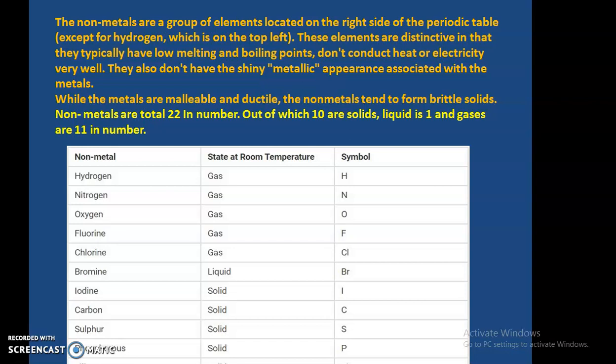In the first video of this chapter on metals and non-metals, we discussed the total count. There are 22 non-metals in total — out of which 10 are solids, 1 is liquid, and 11 are gases.